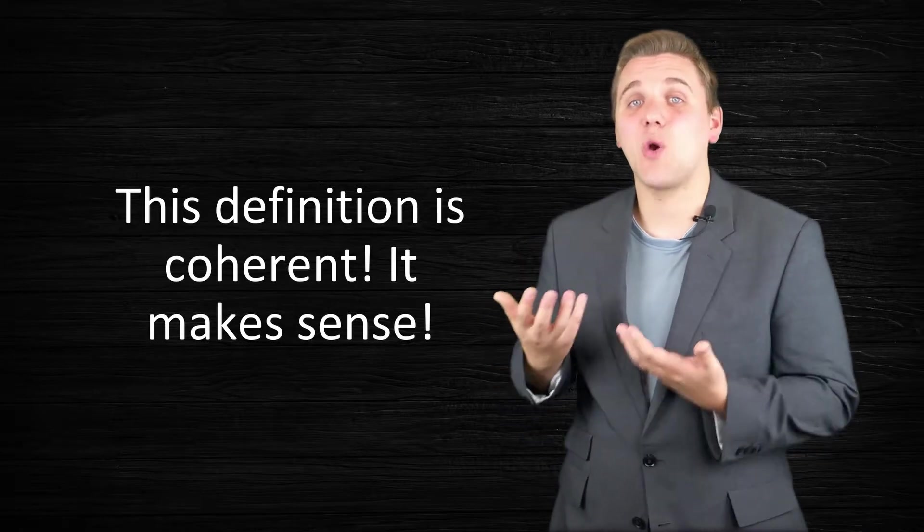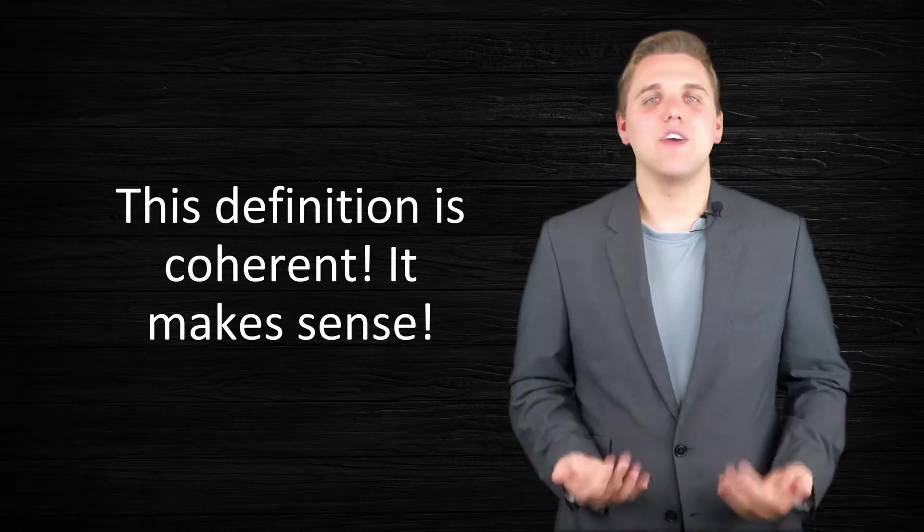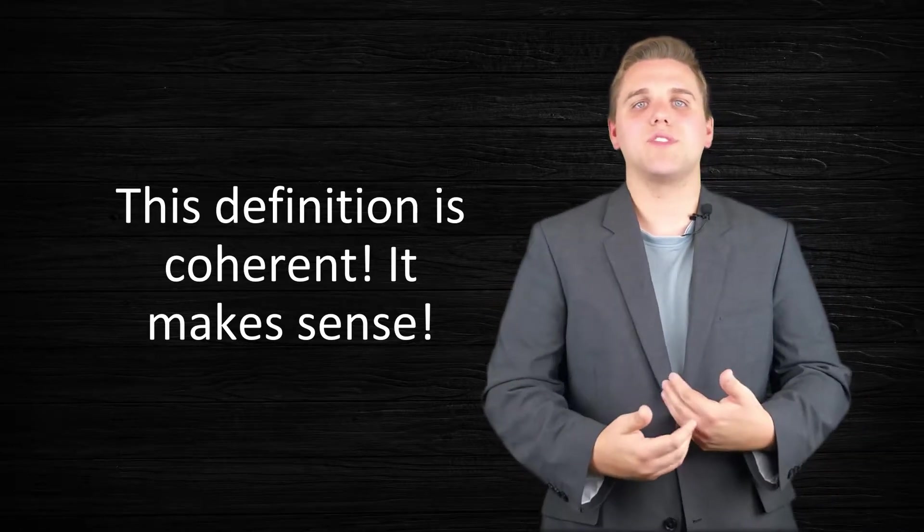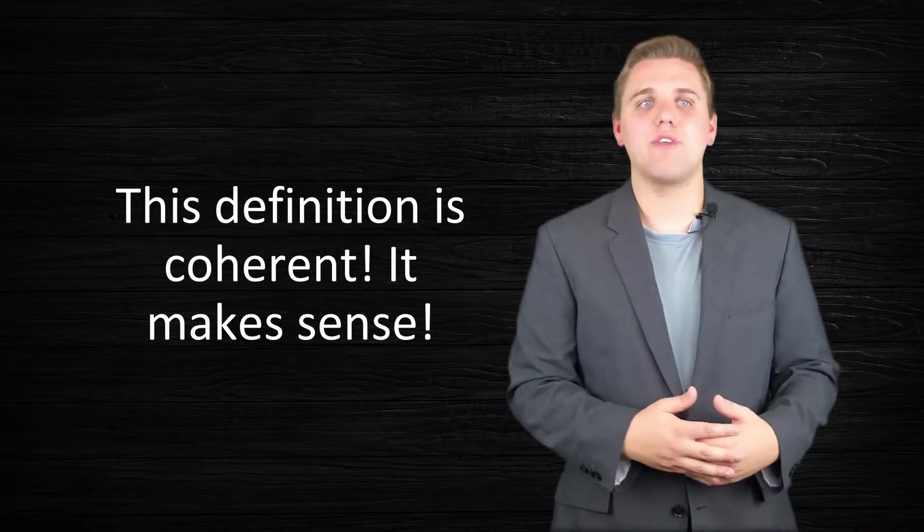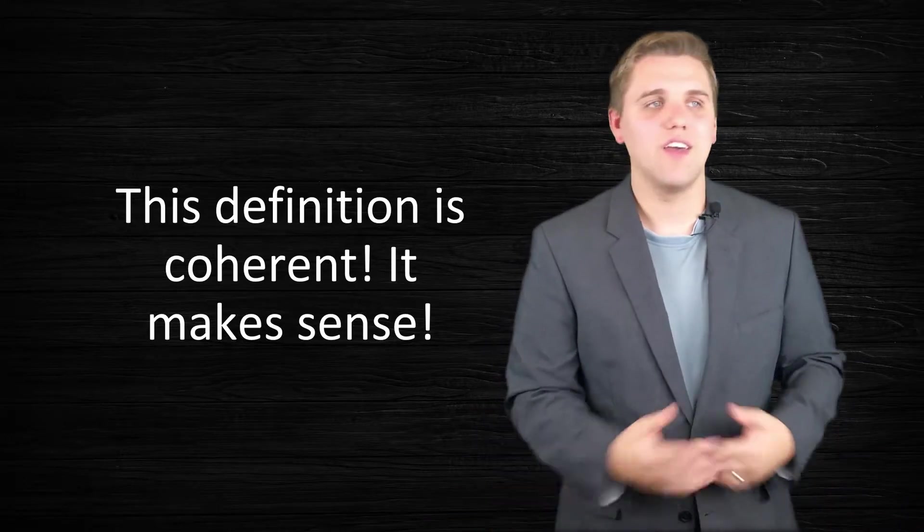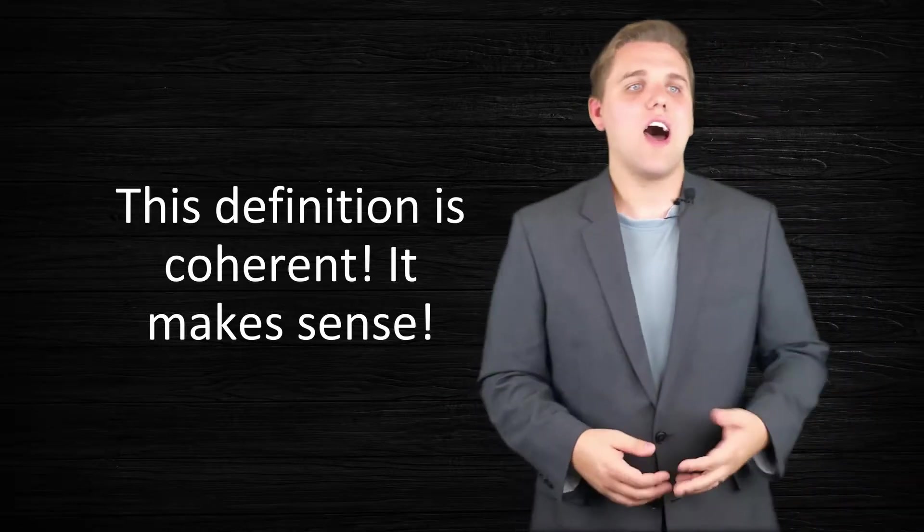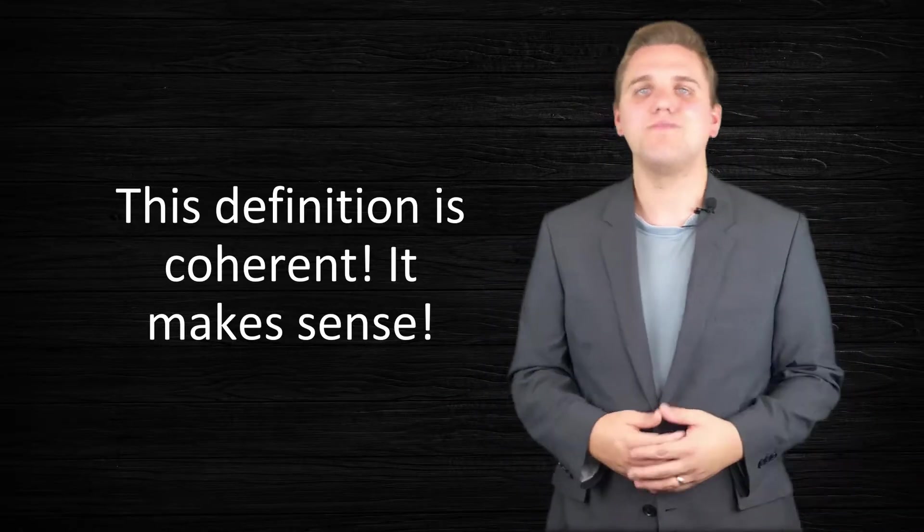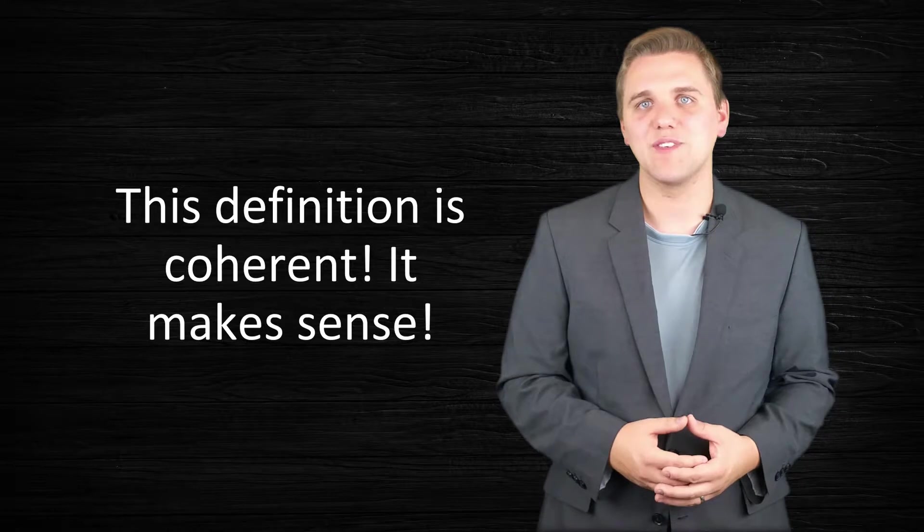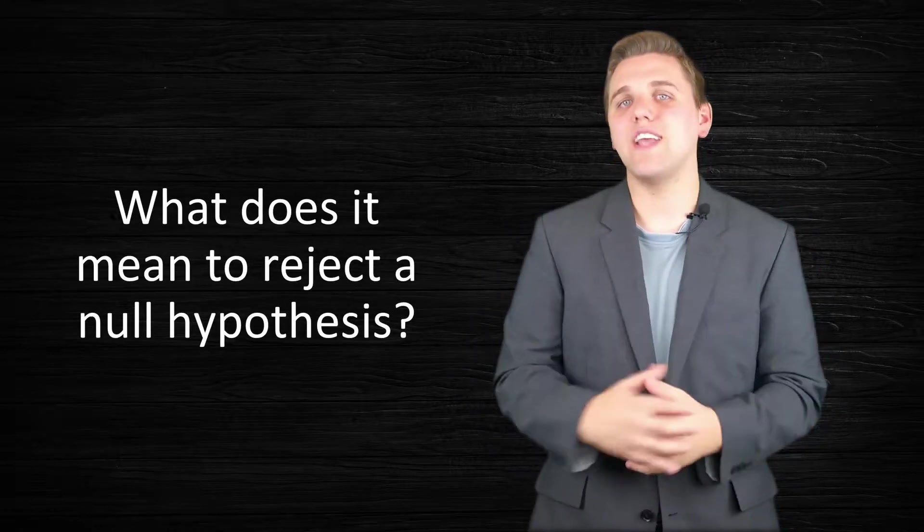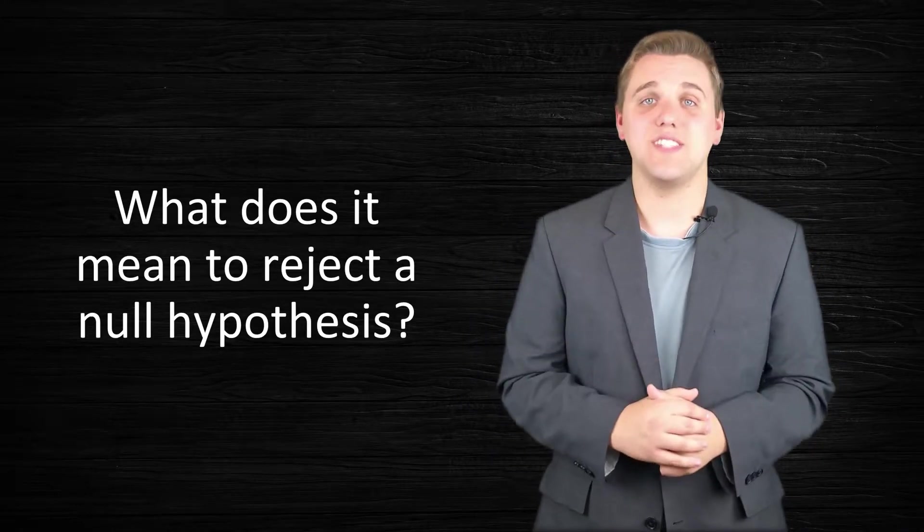Now, to me, this definition is coherent. It makes sense. You're just trying to determine whether or not someone's likely wrong by showing that they're at least 95% wrong. And so whenever I want to go up to a scientist and say they're wrong, I just have to go up to them and say, well, there's like a 95% chance that you're wrong.